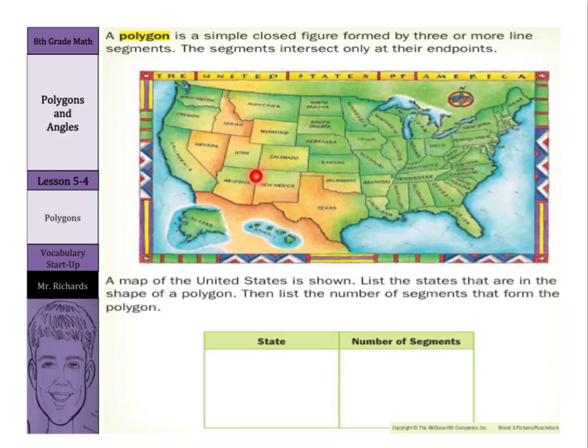So, you know, just a sample answer here, but we could say that for our state we can have New Mexico, and the number of segments that form that state were eight.